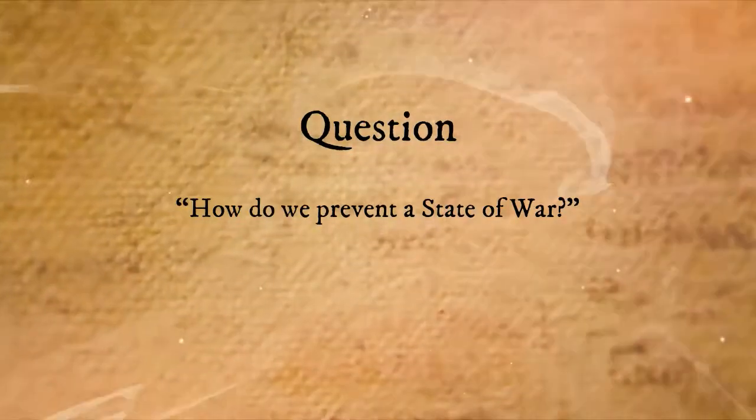For Locke, the state of war is the opposite of God's will for us, and so it must be averted. This brings us to today's question: How do we prevent a state of war? We will be looking at Locke's answer to that question in our next video. If you like this video, hit that like button. If you like the channel and want to become a Founders Club member, hit that subscribe button. And remember, history's a good story that needs to be told — so tell it.